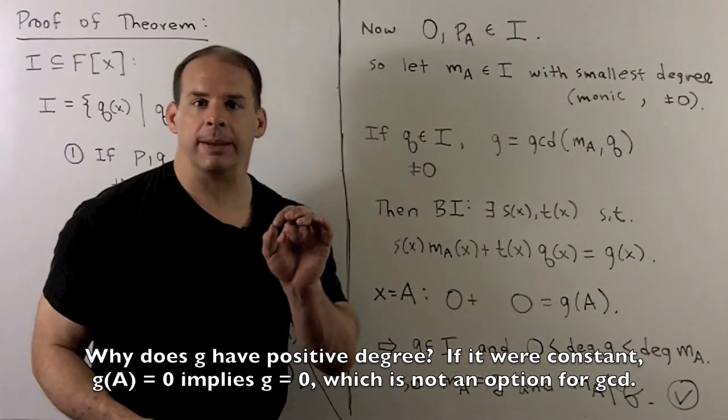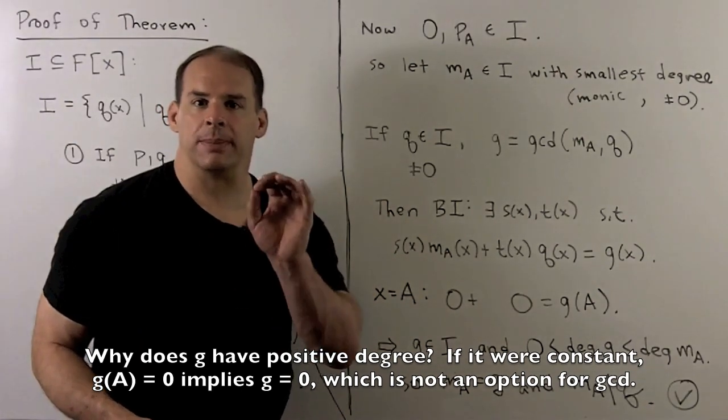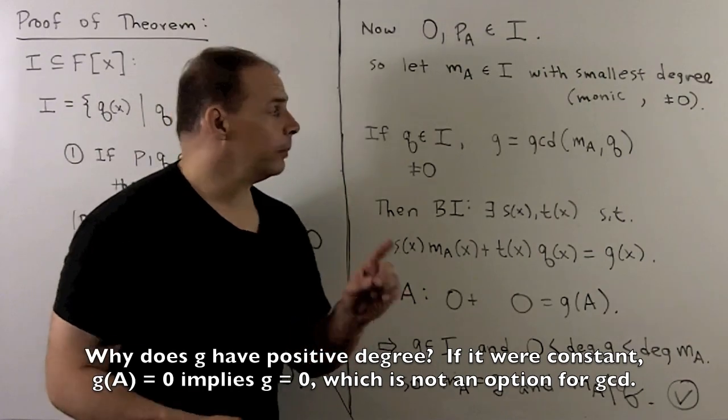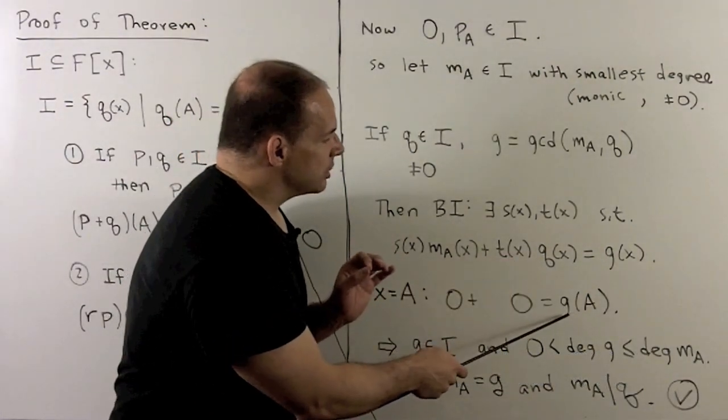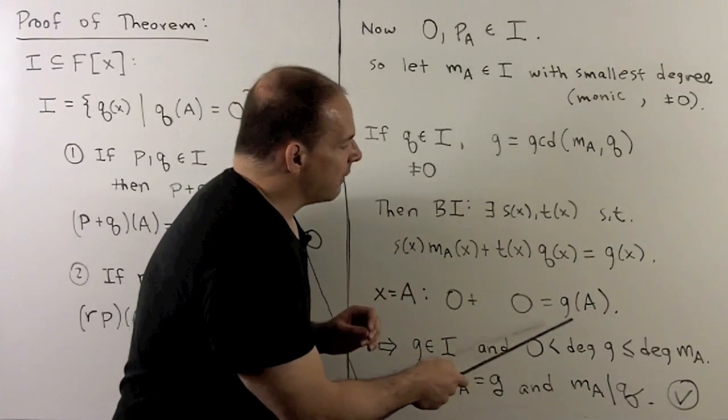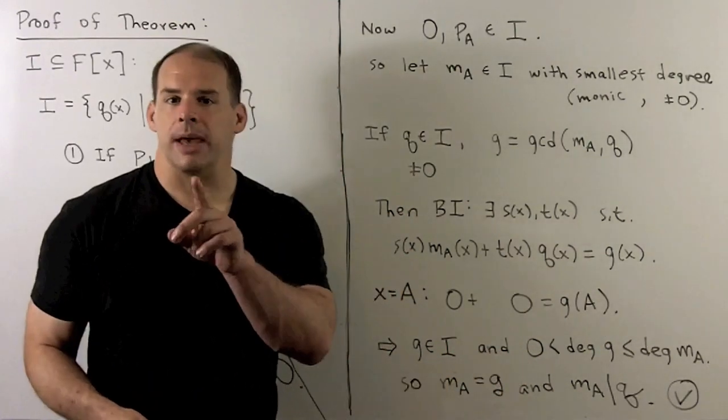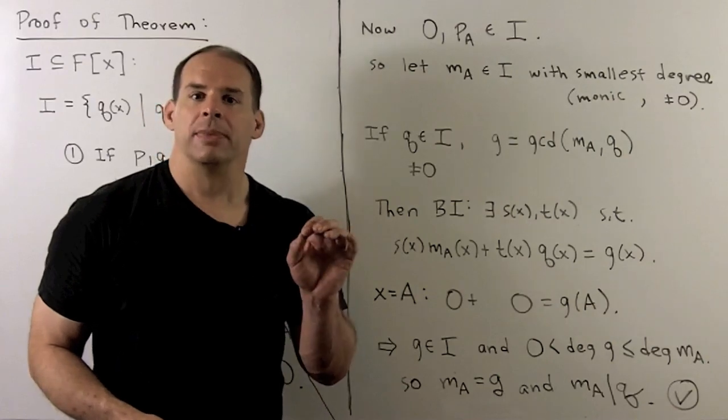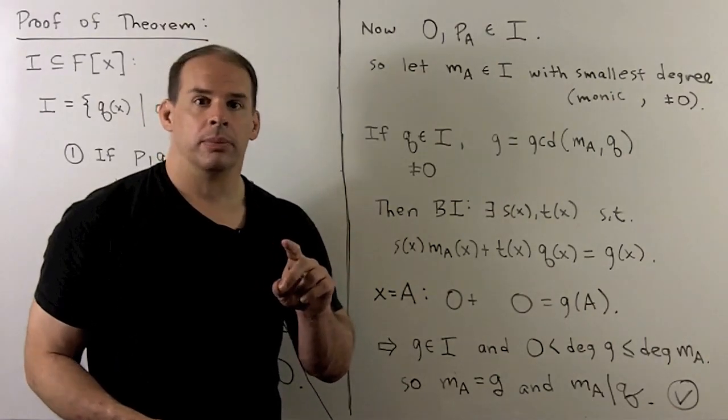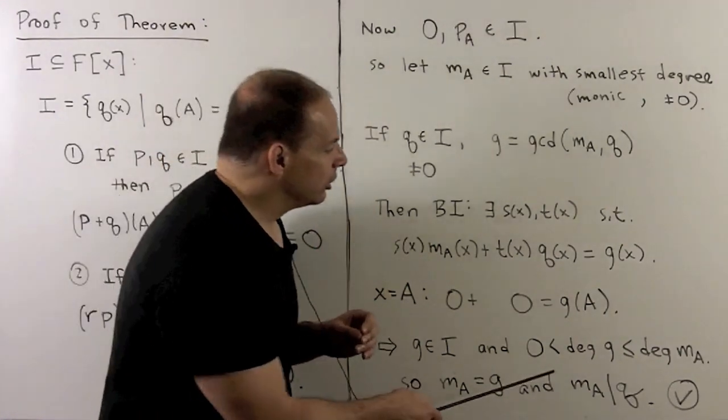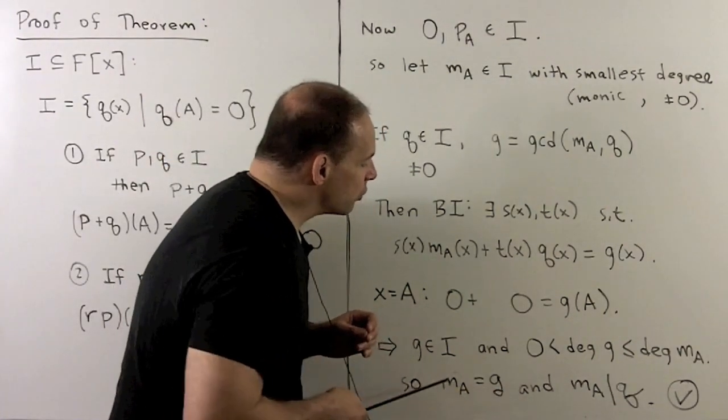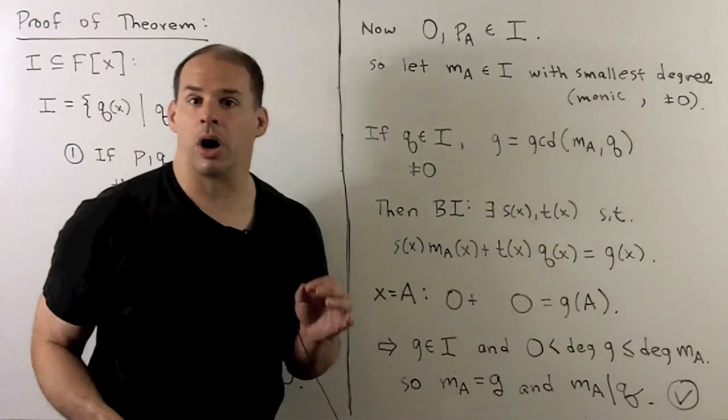Now, G has positive degree and it divides both M_A and Q. So that means first, I have G divides M_A. Since M_A is of smallest degree, that means they're equal. But in turn, that means that M_A will divide Q. So that's the result that we're looking for for the first part of the theorem.